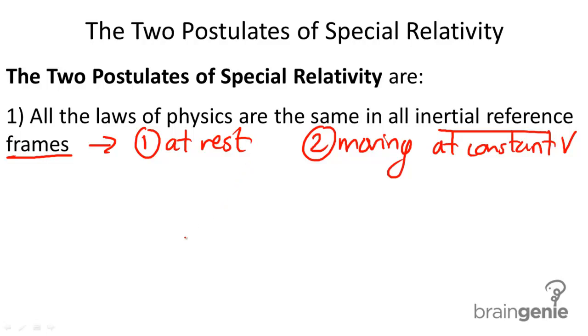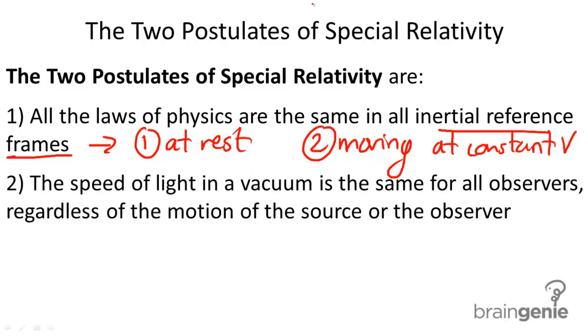That's the first postulate. Now, the second postulate says that the speed of light in a vacuum is the same for all observers, regardless of the motion of the source or the observer.